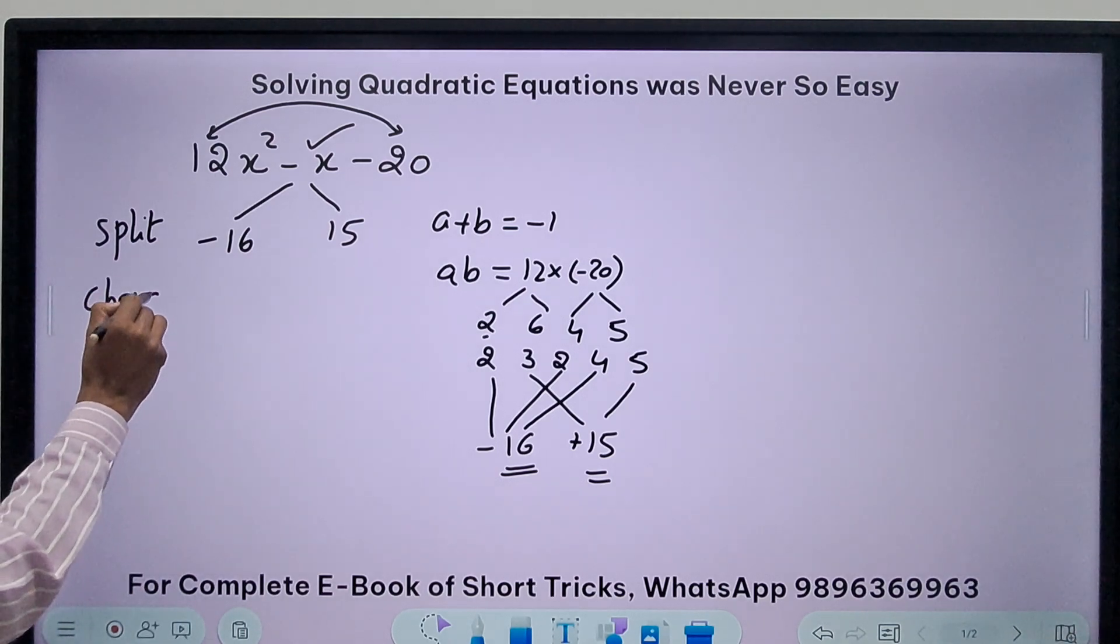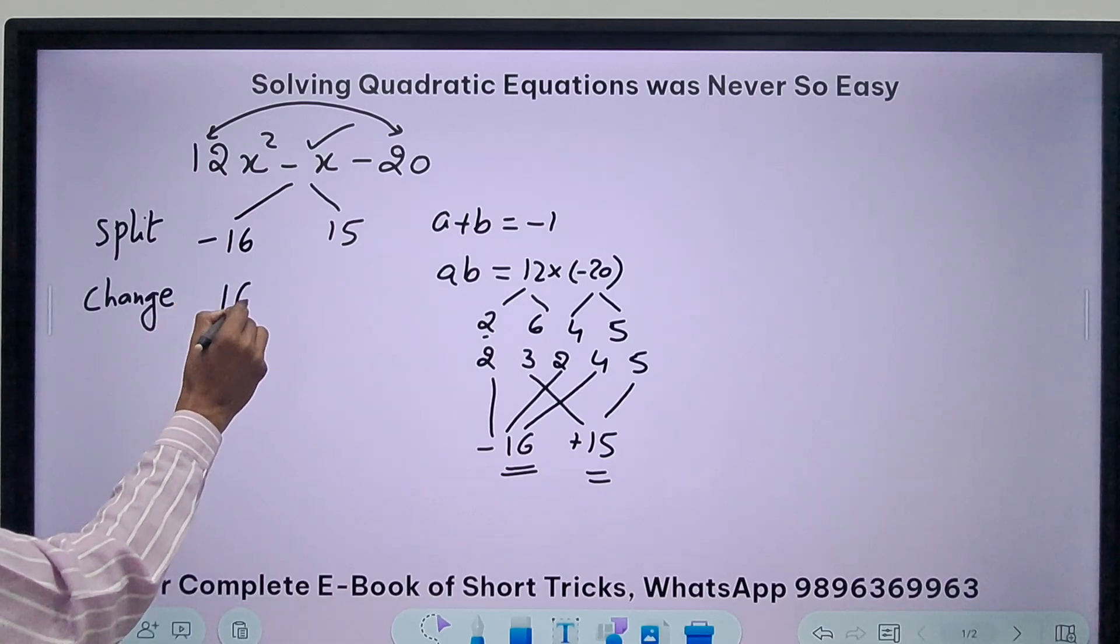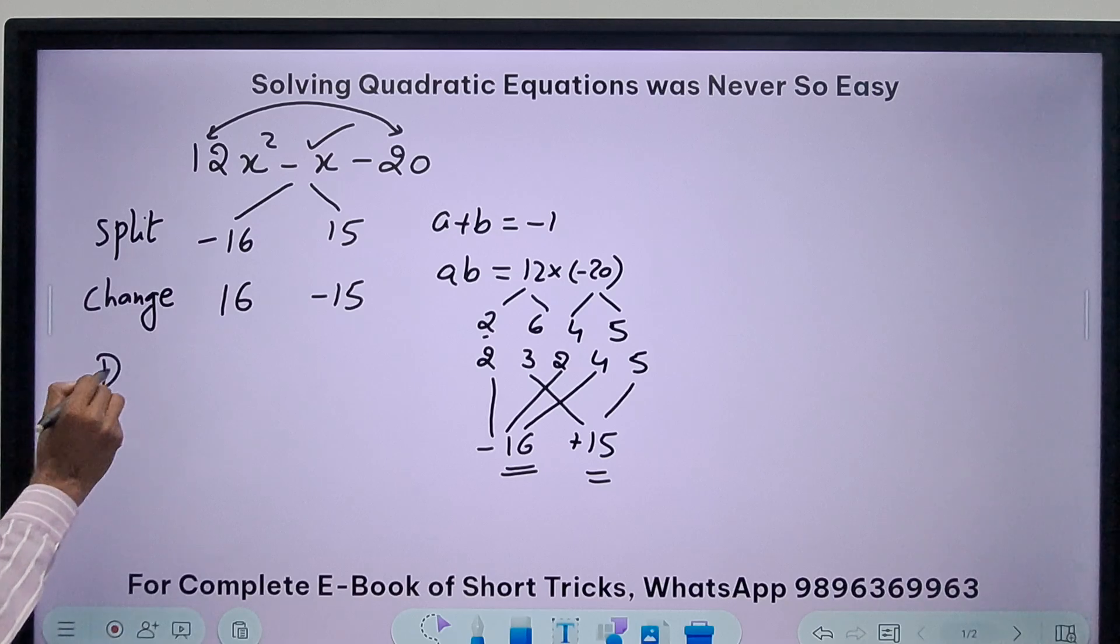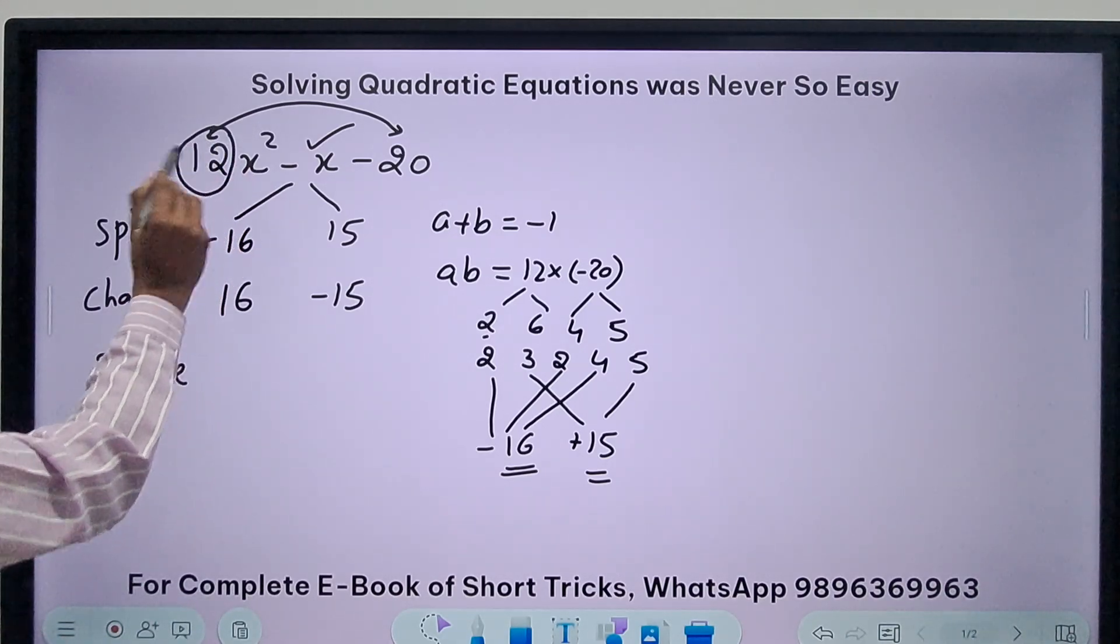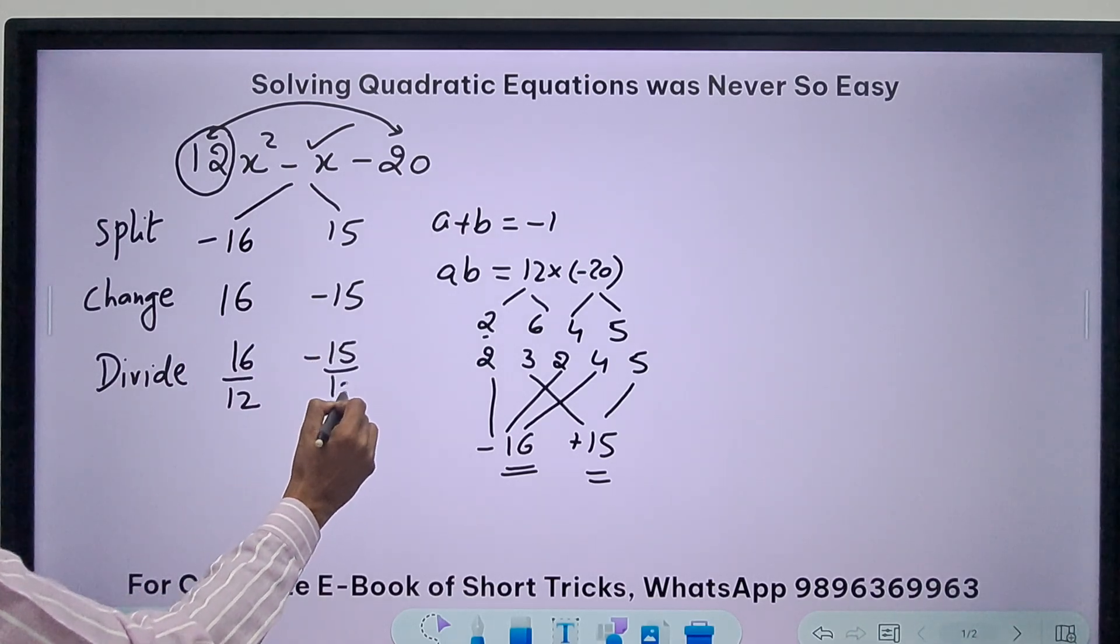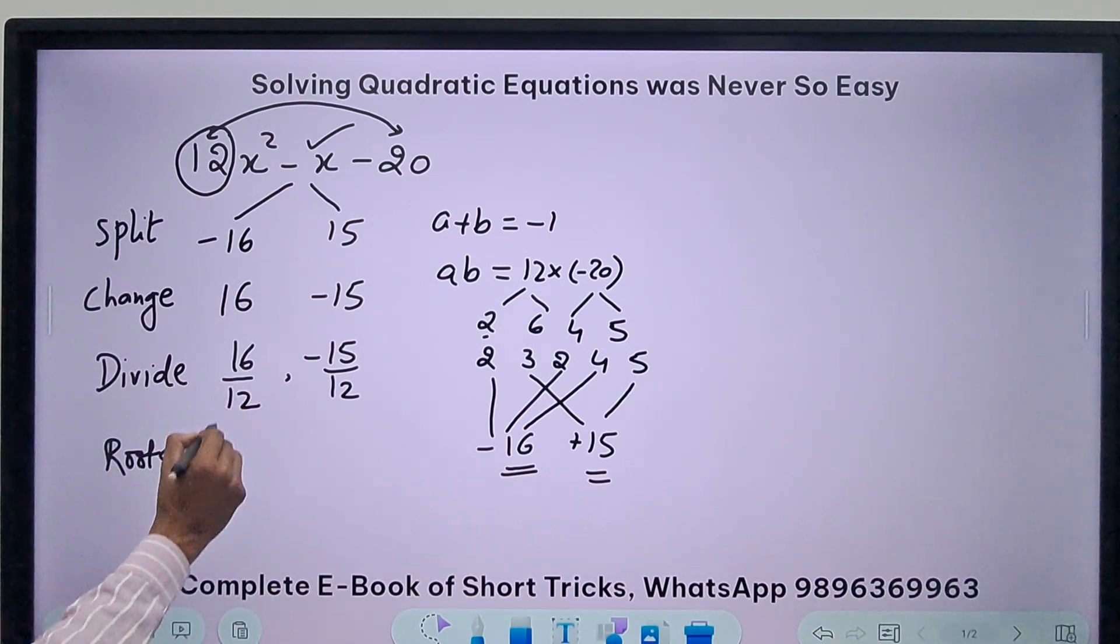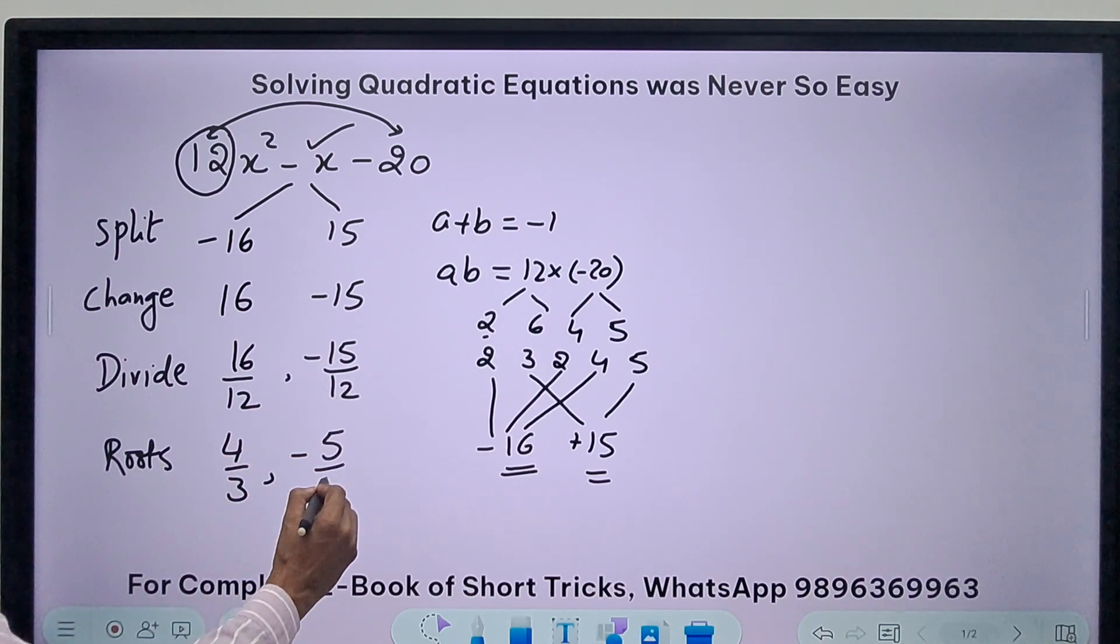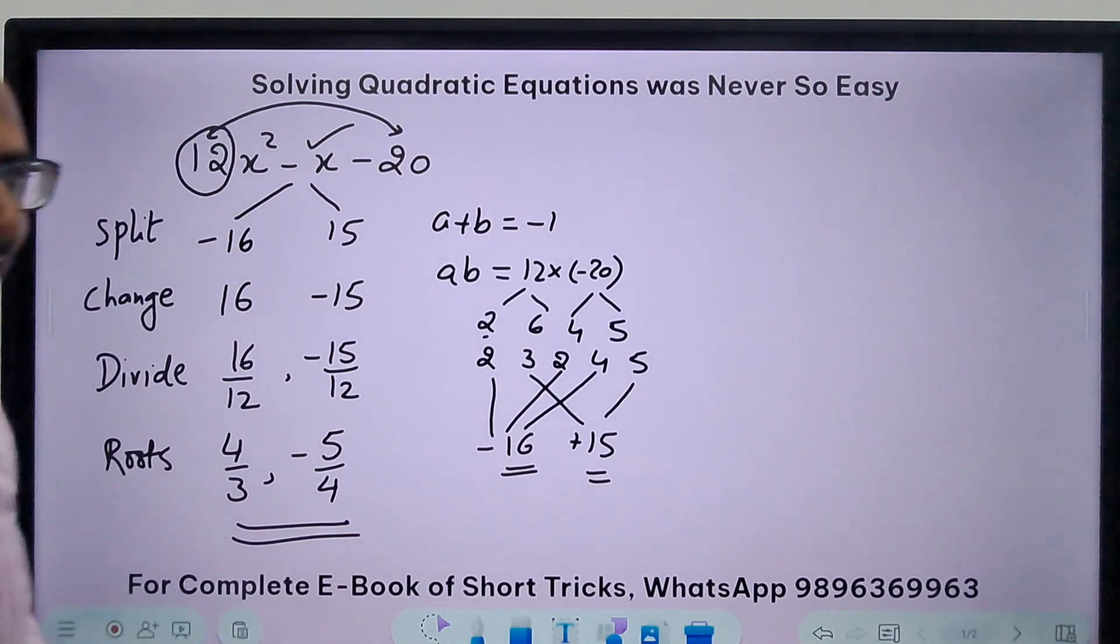Next step is change. Change the sign of these two middle term split factors. So this becomes positive and this becomes negative. And finally SCD divide. Divide means look at the coefficient of x², it is 12. So just divide 16 by 12 and divide -15 by 12 and watch the magic. You have the roots. 4 by 3 and 5 by 4. So here we have the roots of this particular quadratic equation.